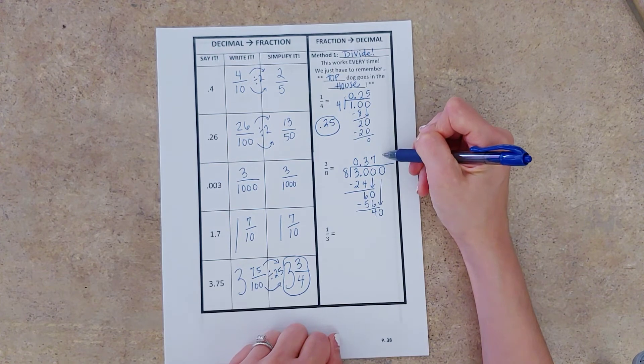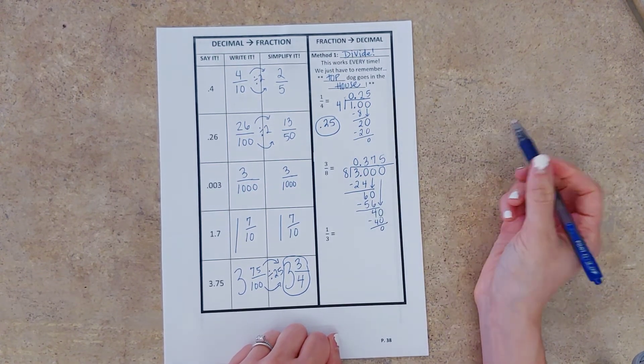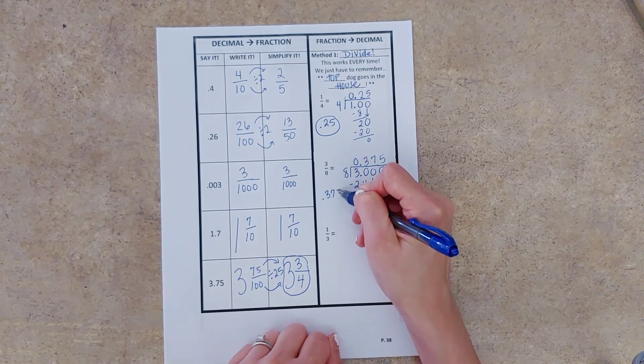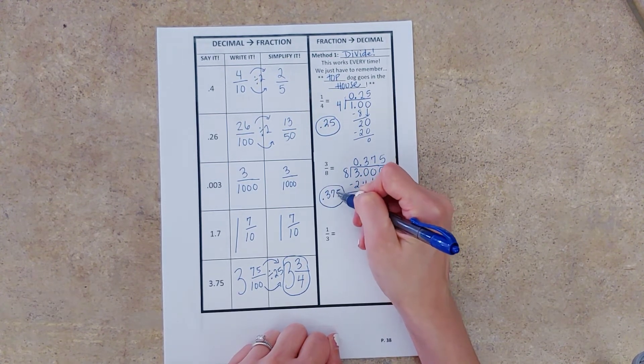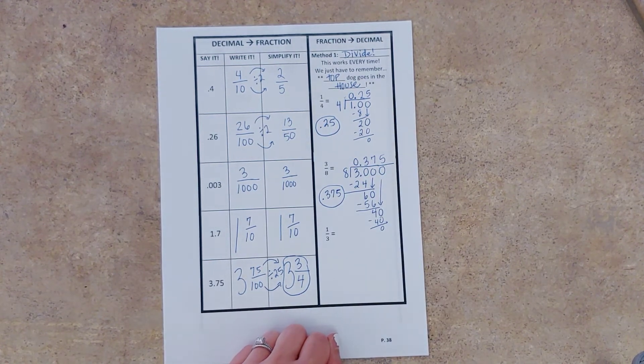Eight goes into forty five times. Woo-hoo! No remainder. So this one we went to three decimal place values before we found a remainder. Awesome. So three hundred seventy-five thousandths.